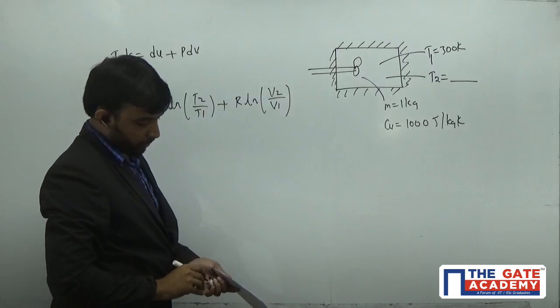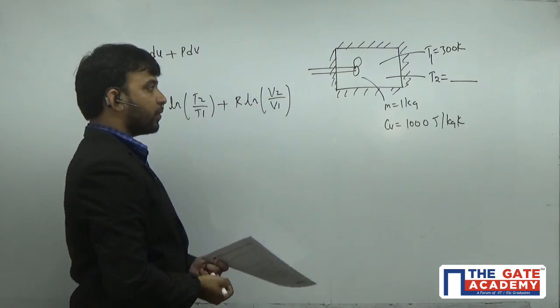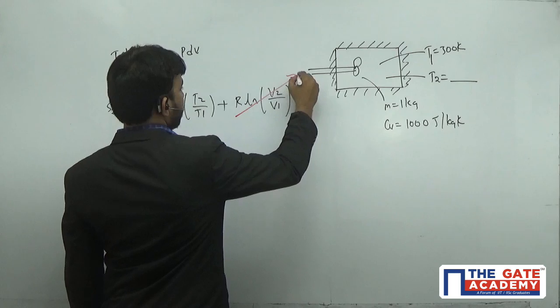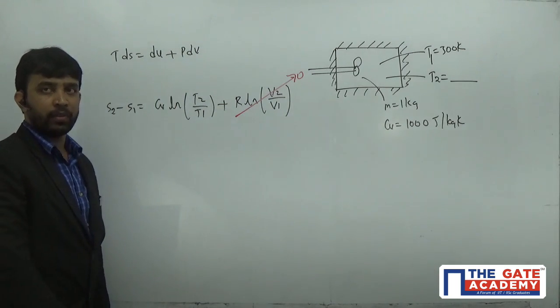Since it's a rigid container, before doing work and after doing work, there is no change in volume. Therefore log 1 is 0, V2 by V1 is 1.